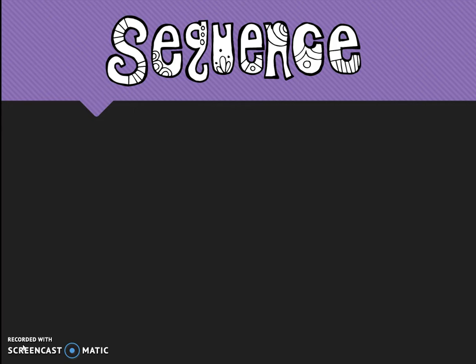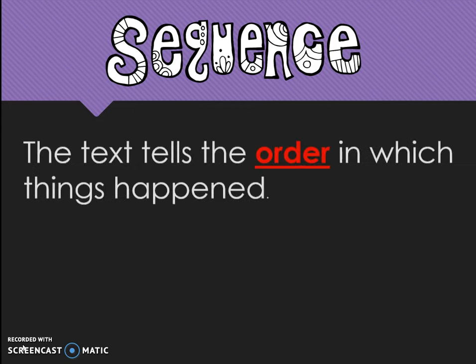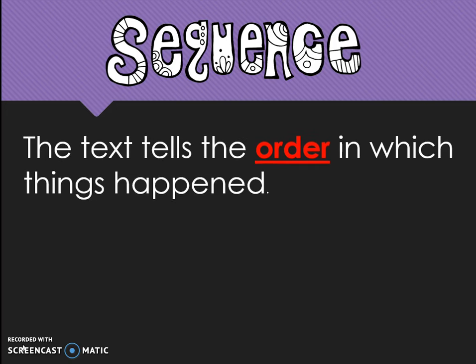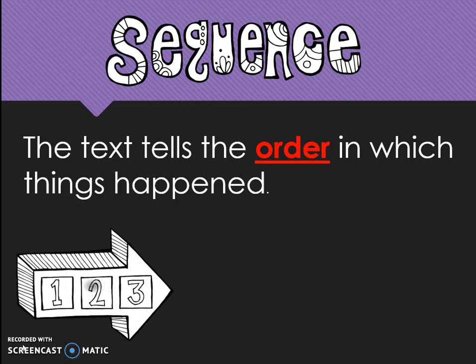The first text structure is sequence. Sequence is when the text tells the order in which things happened. Our visual reminder is this arrow with the numbers one, two, three to indicate order.